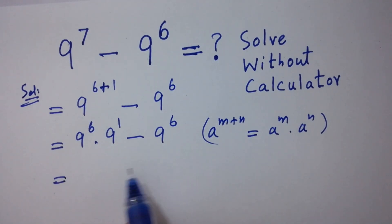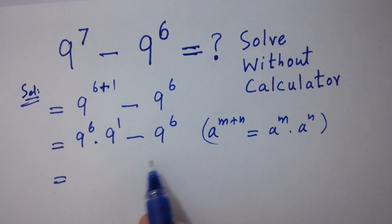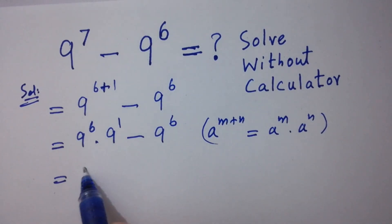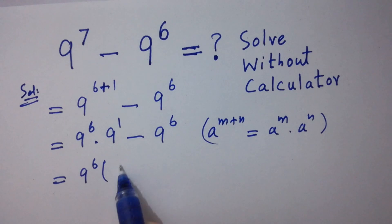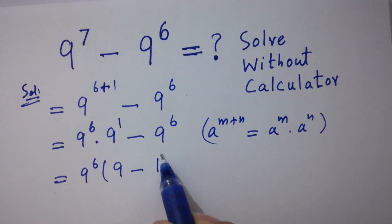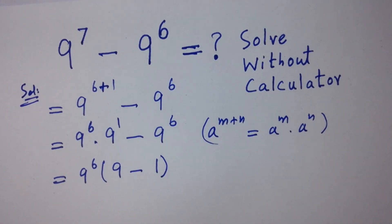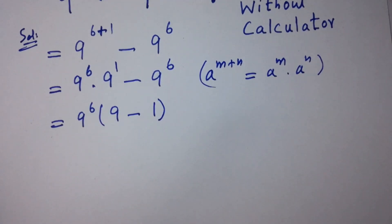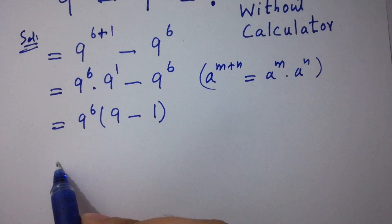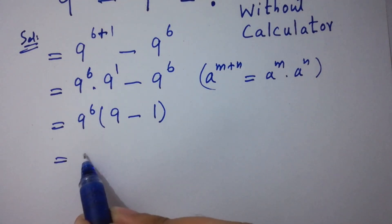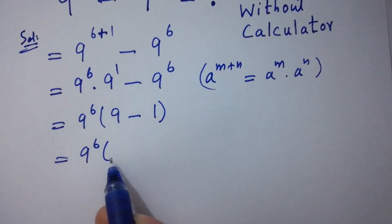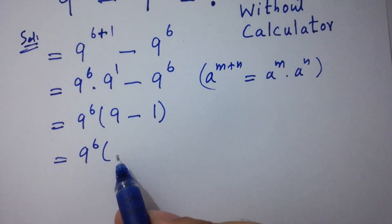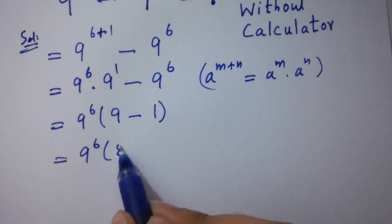Here, 9 to the power 6 can be taken as common. We have 9 to the power 6 times the quantity 9 minus 1, and 9 minus 1 gives us 8.